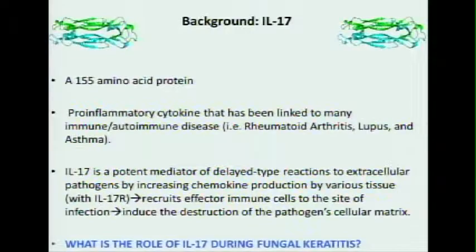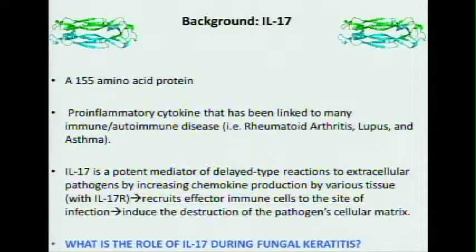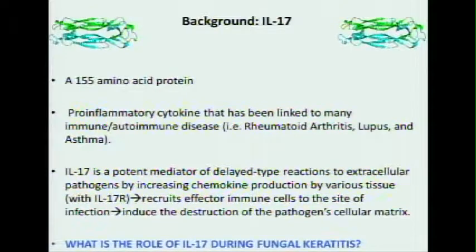A little bit of background: IL-17 is a 155-amino acid protein known as a pro-inflammatory cytokine that has been linked to many immune and autoimmune diseases, such as rheumatoid arthritis, lupus, and asthma. IL-17 is a very potent mediator of delayed-type reactions to extracellular pathogens by increasing chemokine production by various tissues that have IL-17 receptors, causing recruitment of effector immune cells to the site of infection, which in turn induces the destruction of the pathogen cellular matrix.